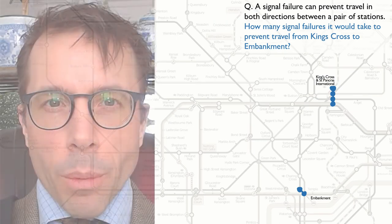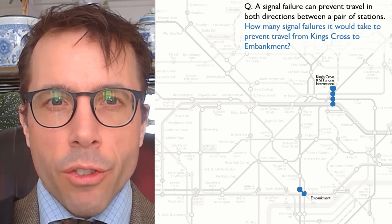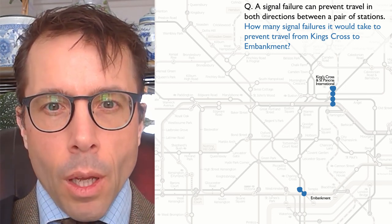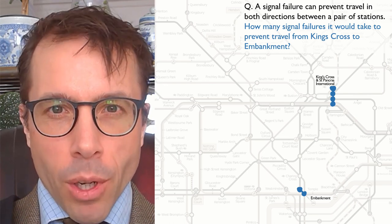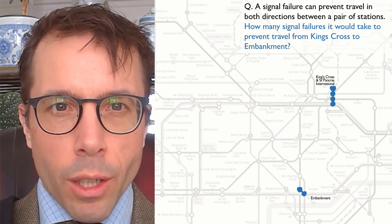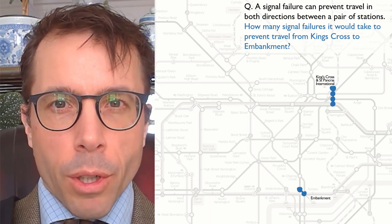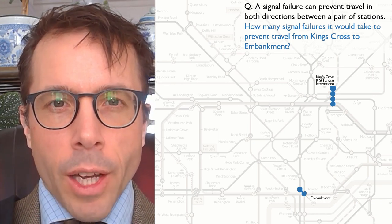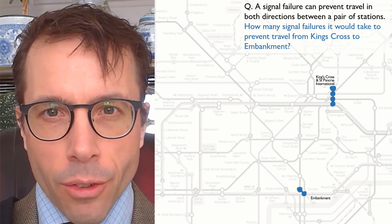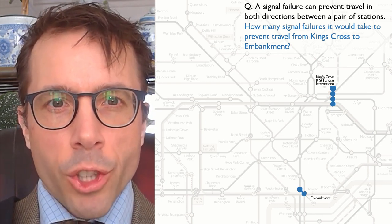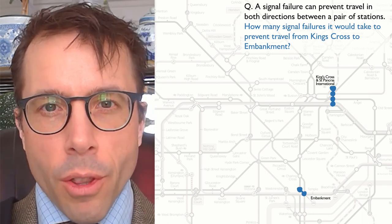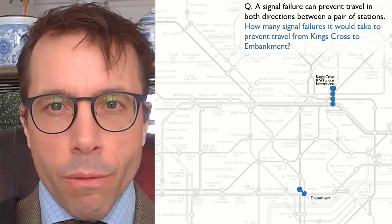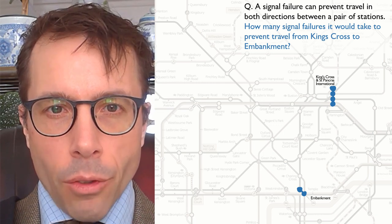Okay, back to the problem from the beginning of this video. How many signal failures would it take to prevent travel from King's Cross to Embankment? I'm not going to tell you the answer, but I am going to say that you can answer it using the translation strategy and by running max flow on an appropriate helper graph. This problem is actually a little bit different to matchings though, because here our goal is to find a translation between cuts and signal failures. You need to devise a flow network in which a minimum cut corresponds to the signal failures that you're trying to find. And then, of course, the Ford-Fulkerson algorithm gives you an easy algorithm for actually finding the minimum cut. So, happy hunting!